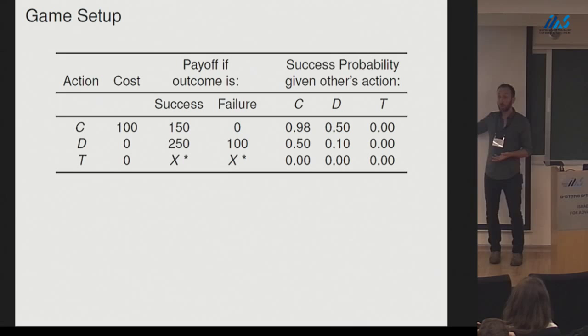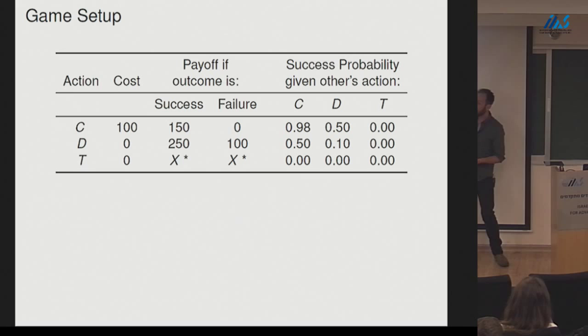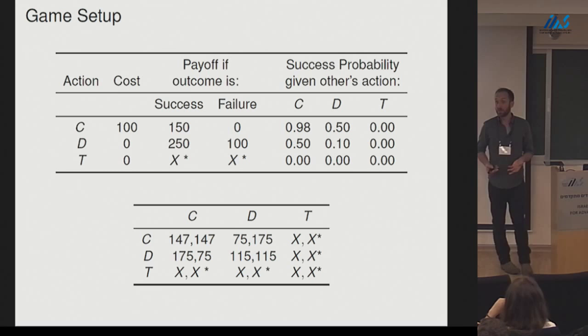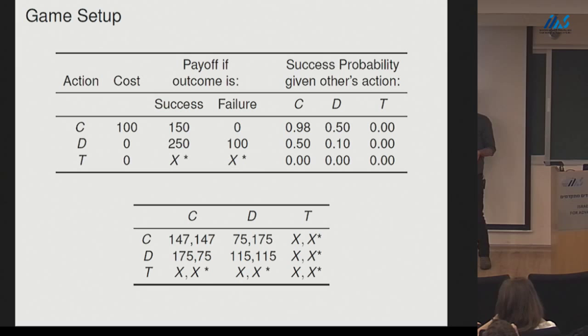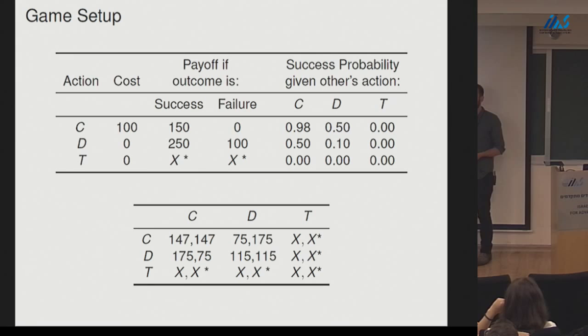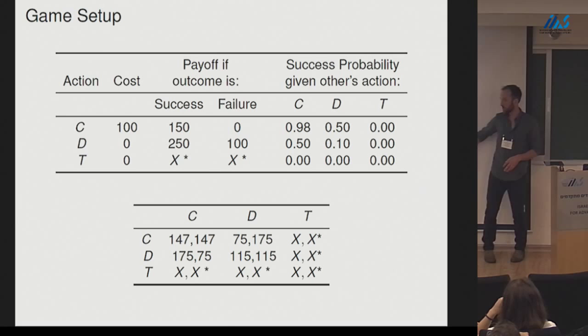Taking expectations, this is a prisoner's dilemma. CC yields $1.47 per period; playing C when the other defects gives $0.75; then $1.75; both defect gives $1.15. That's the standard prisoner's dilemma. I'm adding the option to terminate, which can be unilaterally chosen. If either player terminates, they get the payoff X for all periods remaining in the game — this is the absorbing state. Once we end up here, we stay there forever.